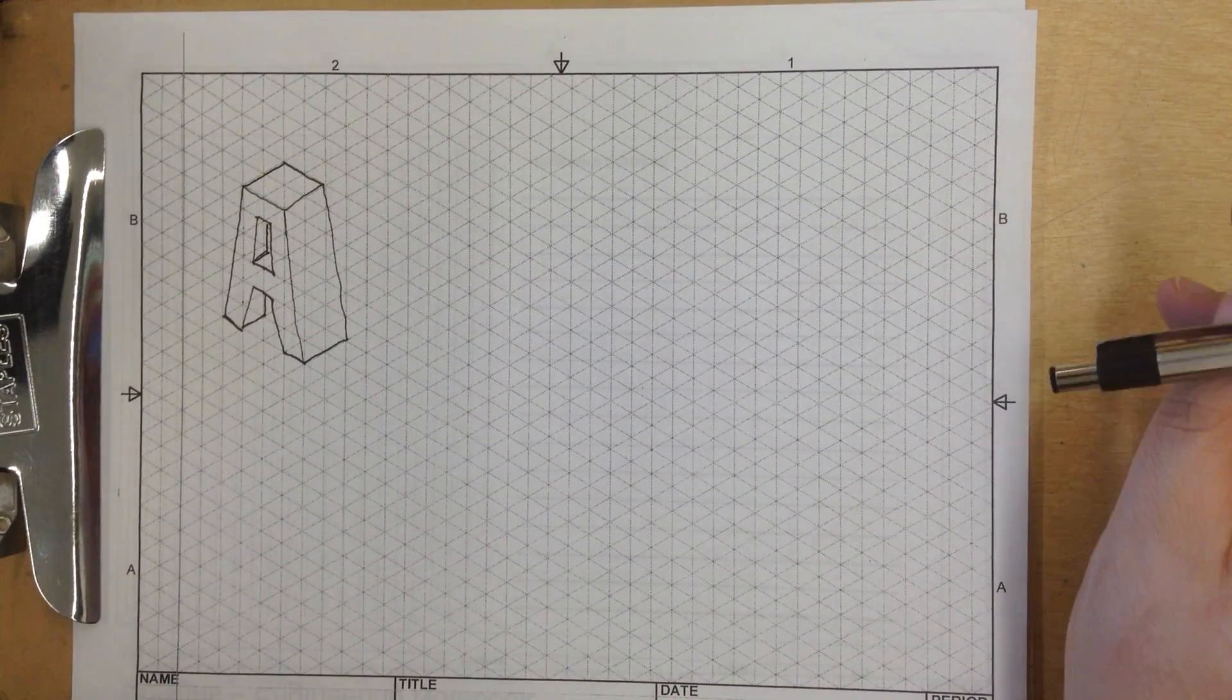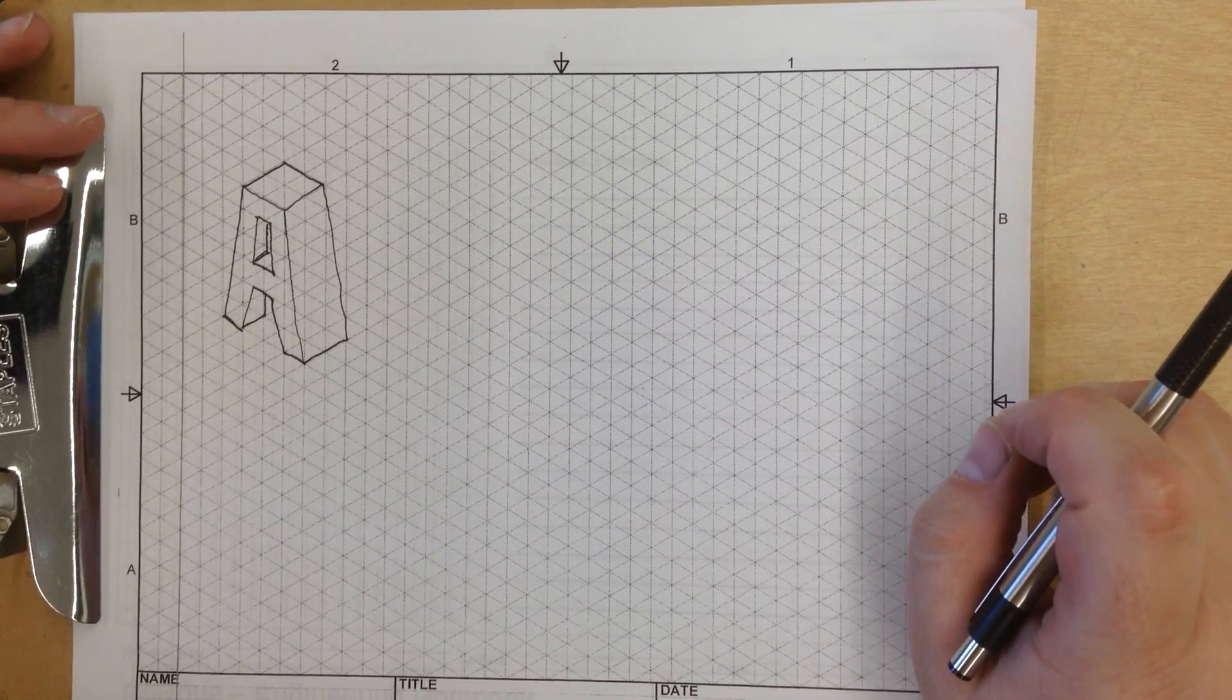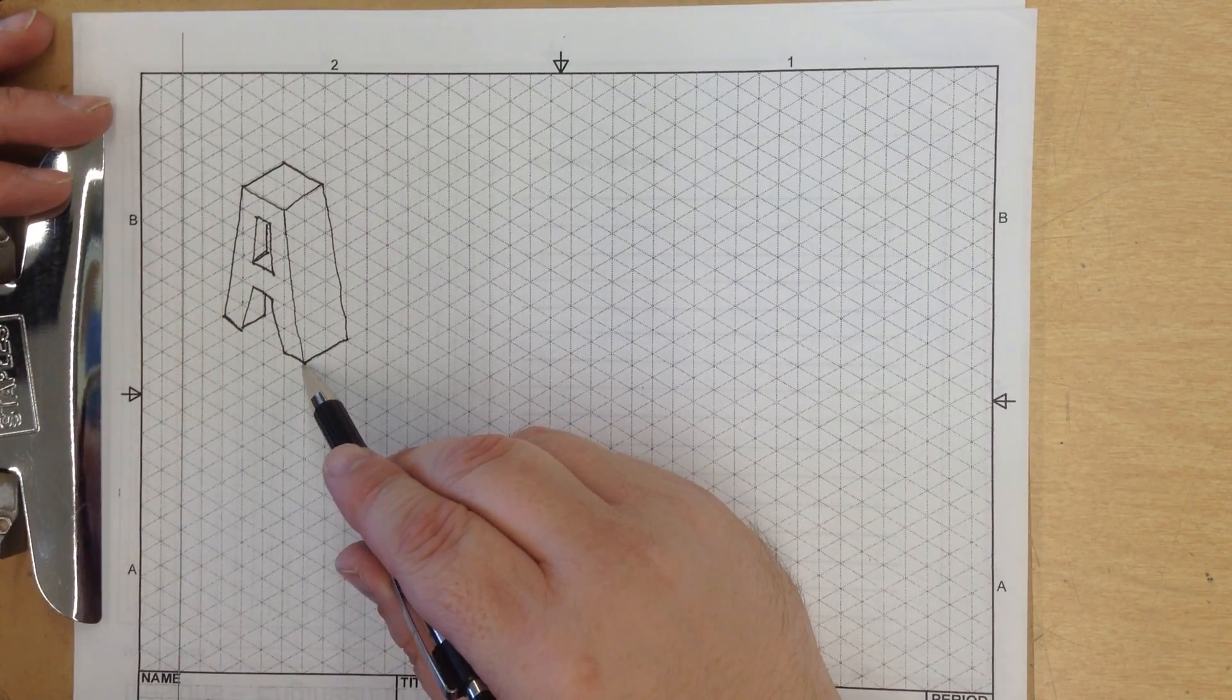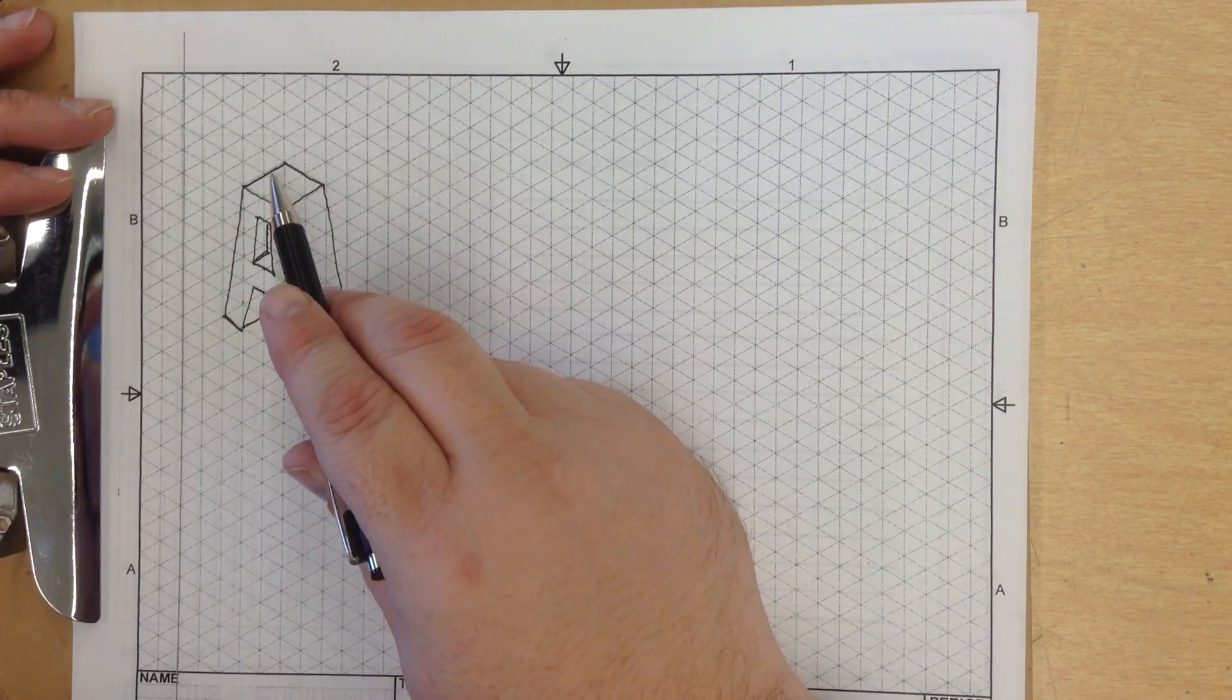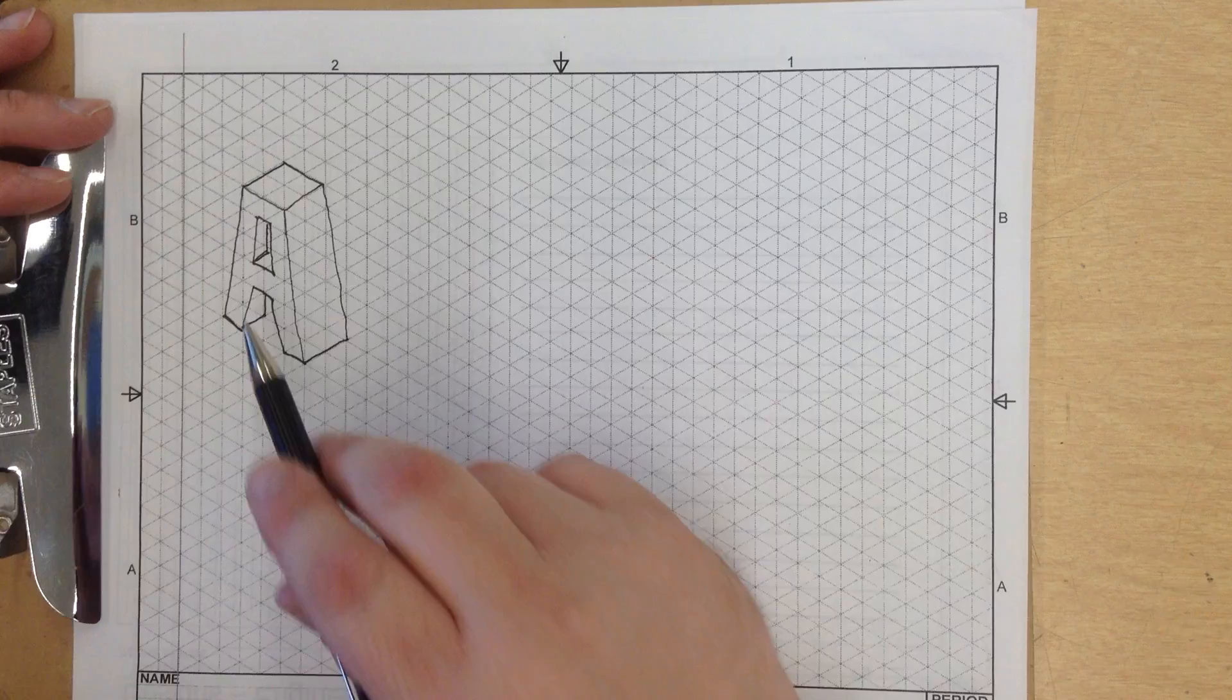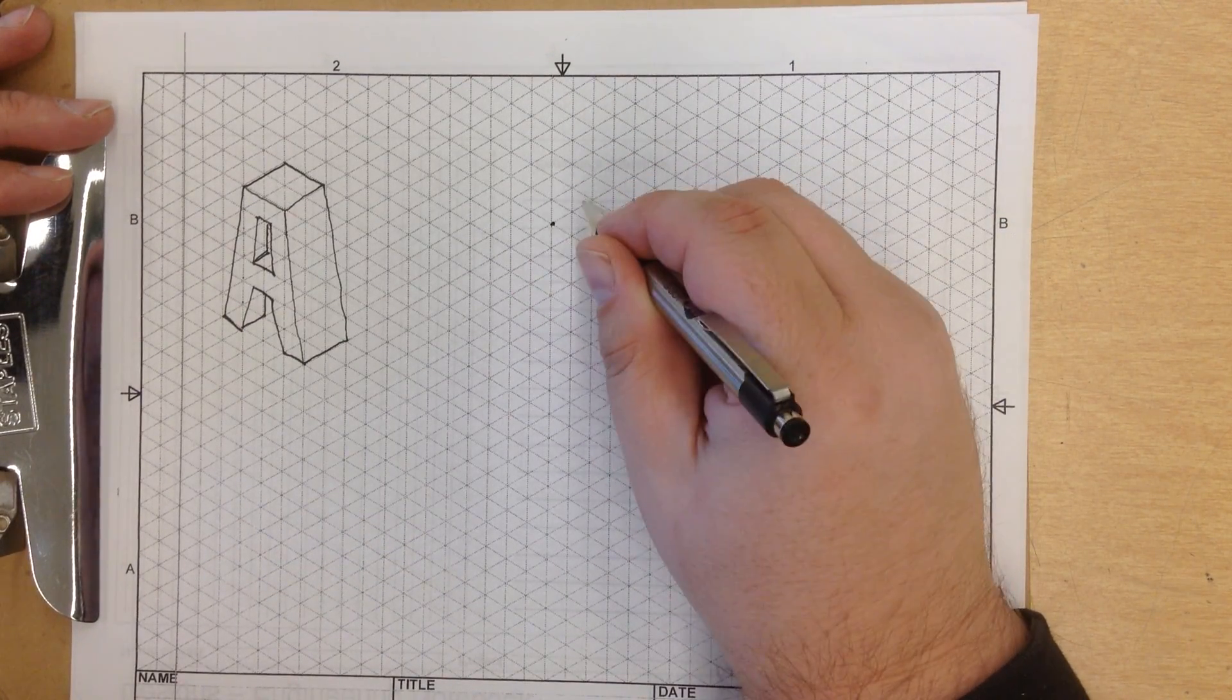In this video we're going to be doing the dreaded A. The A is a very difficult isometric drawing. Normally I suggest starting with an origin point closest to you, but this one I actually suggest beginning on the top with an origin point. So I'm going to make my origin point right there.